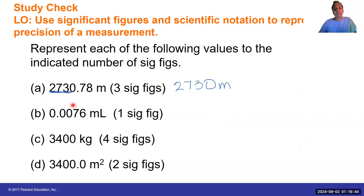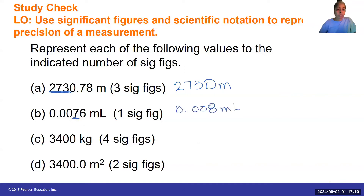How would I round off this value to one significant figure? First, find the first non-zero digit, which is a 7. I want to keep the 7 but round to one significant figure. To the right of the 7 is a 6. When rounding, the 7 goes up because 6 is greater than 5. Notice that I can't get rid of those leading zeros because they are placeholders, but I can drop off the 6 on the end.